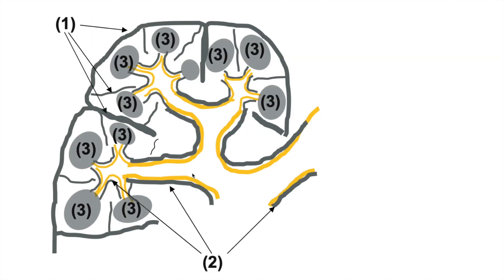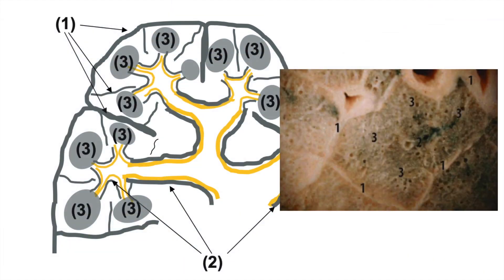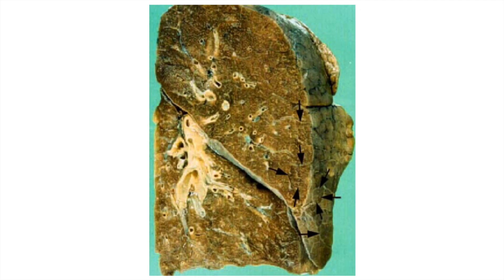Here we see another diagram in coronal section. The peripheral connective tissue is shown with the pleura and the septa. Then the axial connective tissue follows the bronchus and the arteries. Finally we have the parenchymatous connective tissue, noted as number three. In the lung, the peripheral connective tissue is visible going in various places with these septa, the axial connective tissue is along the bronchus, and the parenchymatous tissue is inside.